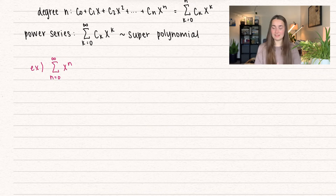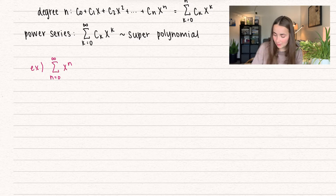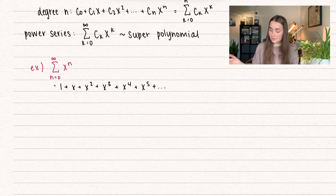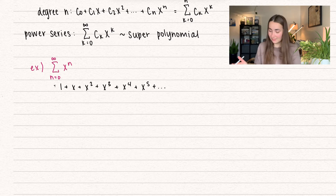Now let's go ahead and think of an example — here's a very basic one. We have a summation n equals 0 to infinity of x to the power of n. If I were to write this out, we would have 1 plus x plus x squared plus x cubed, and this just goes on forever. That right there is a power series, but what makes this interesting? The interesting part is the x values — if I were to plug in a number, would the series diverge or would it converge?